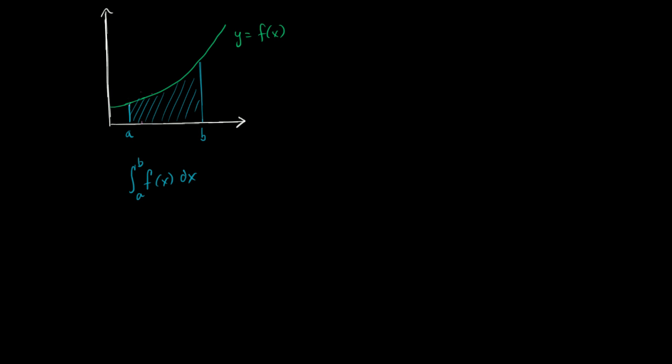We can approximate it by splitting it into n rectangles. So that's the first rectangle, that's the second rectangle, and you're going to go all the way to the nth rectangle. This would be the n-1th rectangle. For the sake of this argument, we're going to assume that they're all the same width.